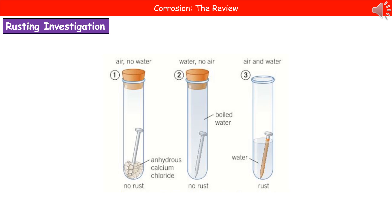The second tube is boiled water, so we have water but no air in that one. And in the third tube, we have both air and water. What you find through that experiment is that we only get the rust forming in tube three, because we've got to have oxygen and water present for rusting to occur.